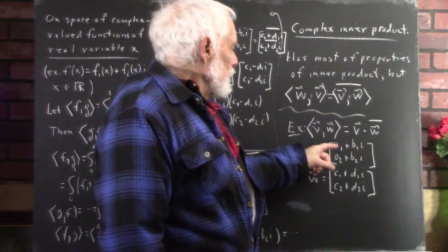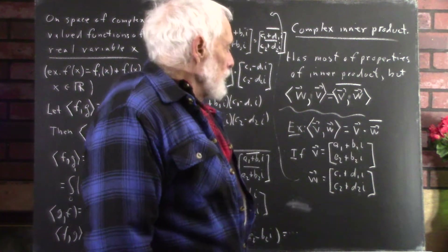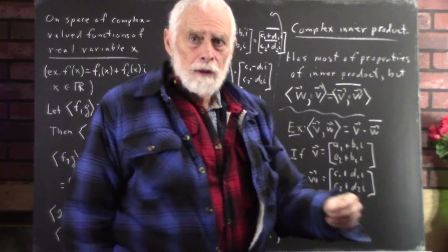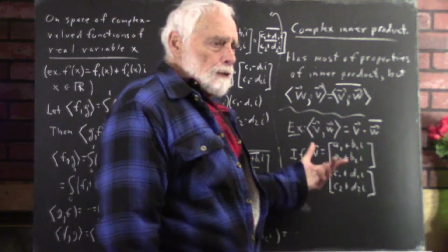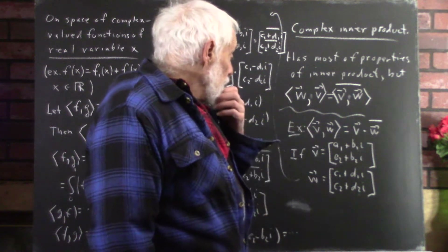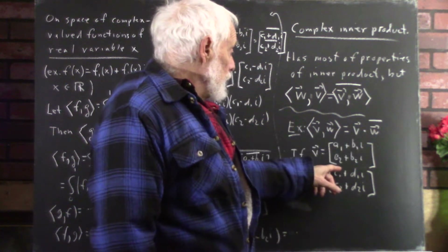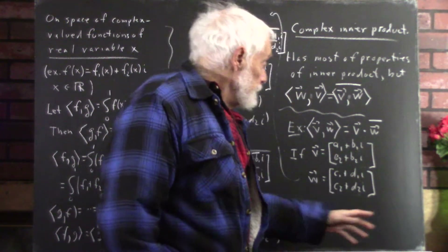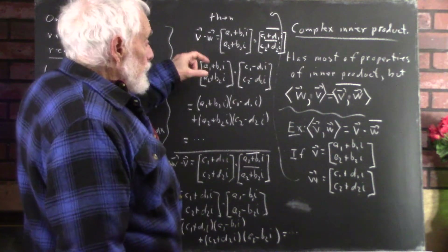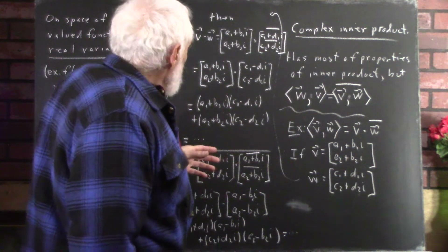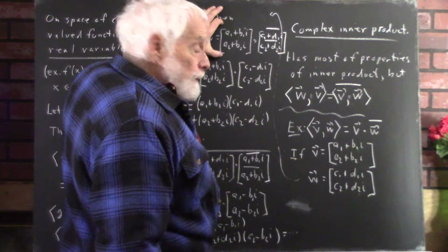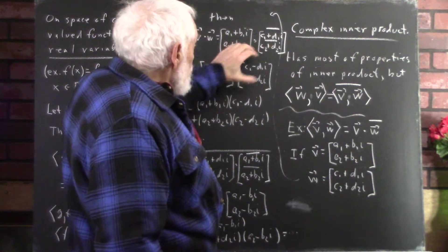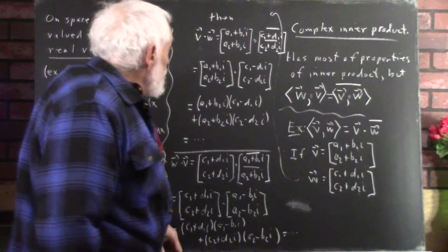For example, if ⟨V,W⟩ equals V dot W using the same rule as for the dot product with real vectors, and we have a vector in two complex dimensions: V = (A1 + B1i, A2 + B2i) and W = (C1 + D1i, C2 + D2i), then the inner product is V dot W. That equals the V vector times the complex conjugate of the W vector, so the imaginary parts of W change sign while V stays the same.